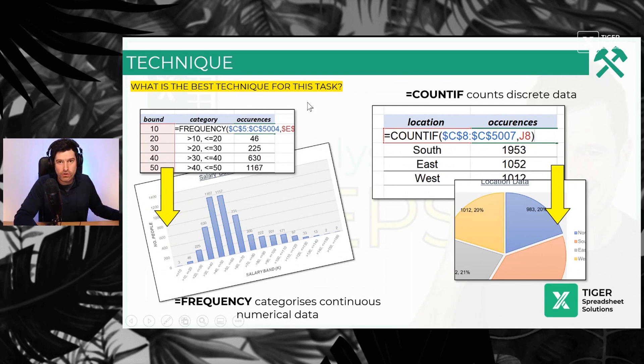So what's the best technique for your task? Well, you know the type of data. If you have continuous data, like the salary data in the download file, it's all about the FREQUENCY formula. And fans of the channel know I love the FREQUENCY formula. Check out our dedicated video, the pin comment at the top of the comment section. I'll put the link in there. What does it do? It's this concept of categorization or bins.